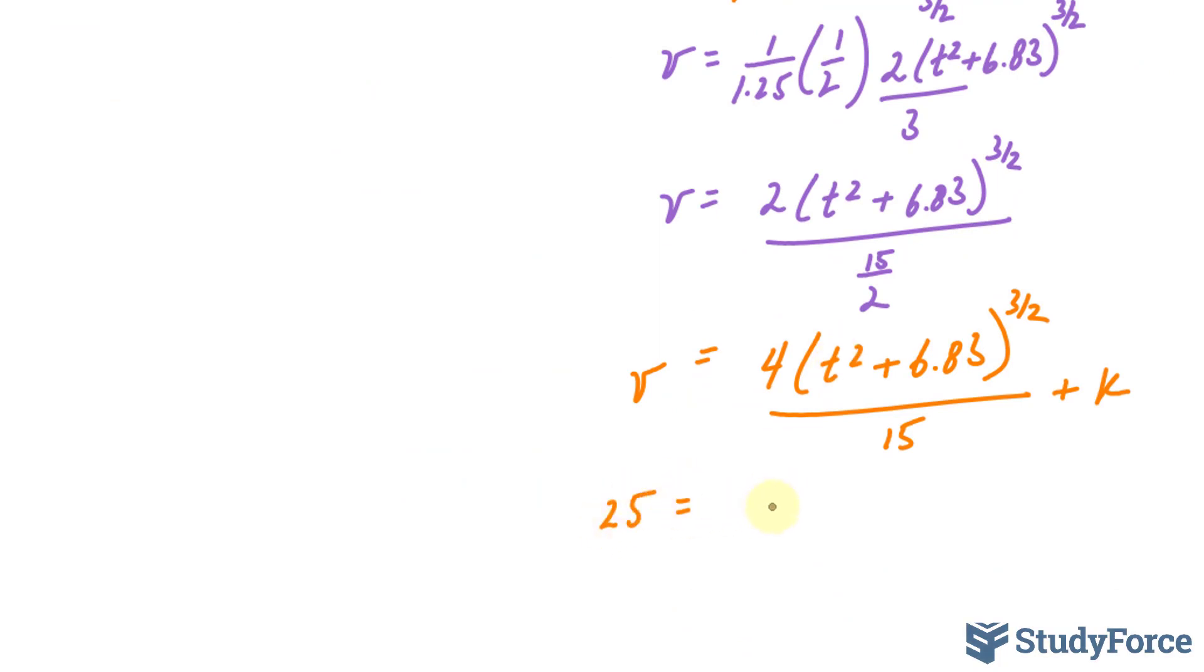25 is equal to 4, 0 to the power of 2 is 0, so we have 4 over 15, 6.83 to the power of 3 over 2 plus k. I'm going to bring this term over, using my calculator once more.